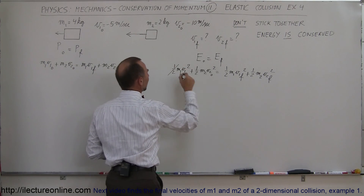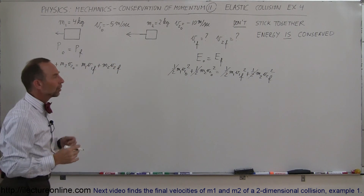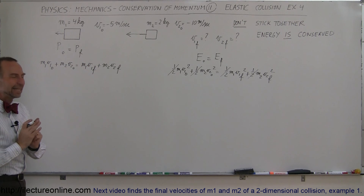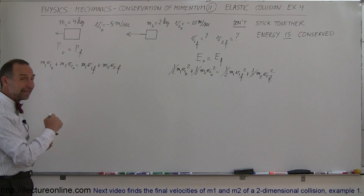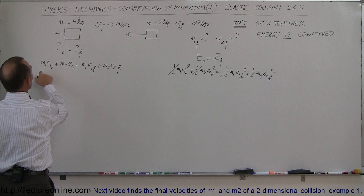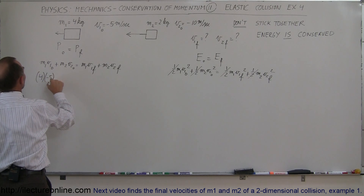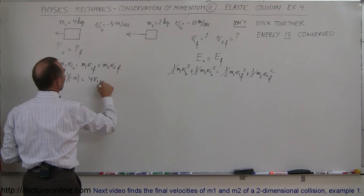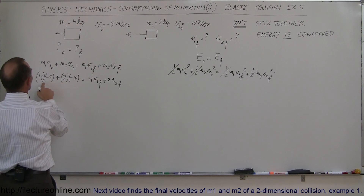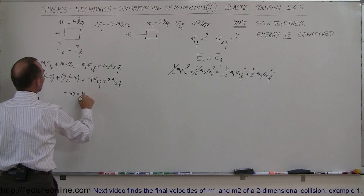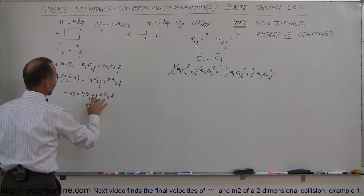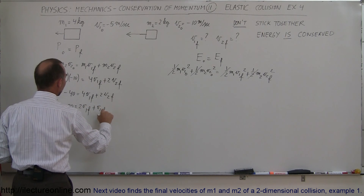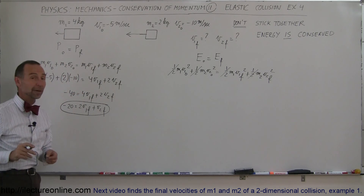Let's go ahead and do that. We can simplify the energy equation by multiplying both sides by 2, getting rid of the one-halves. Plugging in numbers and remembering that velocities to the left are negative: m1 is 4 and v1 is minus 5, plus m2 is 2 times v2 which is minus 10, equals 4 times v1 final plus 2 times v2 final. Simplifying, minus 20 minus 20 gives minus 40, equal to 4 v1 final plus 2 v2 final. Dividing both sides by 2 gives minus 20 equals 2 v1 final plus v2 final.